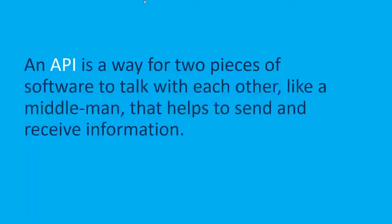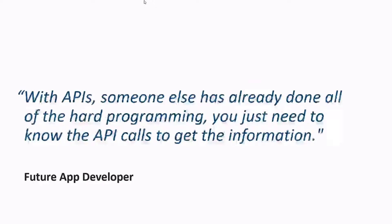An API is a way for two pieces of software to talk with each other, like a middleman that helps to send and receive information. With APIs, someone else has already done all of the hard programming — you just need to know the API calls to get the information.